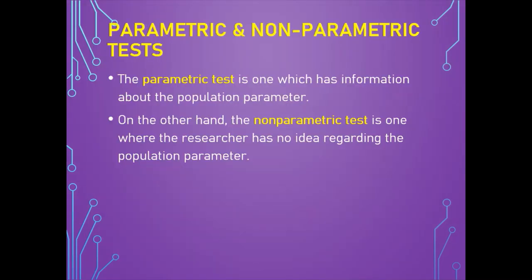A parametric test is one which has information about the population parameter. It provides generalizations for making statements about the mean of the parent population. A t-test based on Student's t-statistic is often used in this regard. The t-statistic rests on the underlying assumption that there is a normal distribution of the variable and the mean is known or assumed to be known.